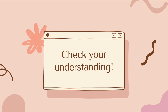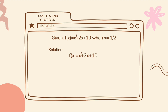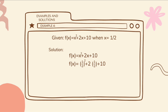Do you now know how evaluation of functions work? Let's try some more examples. Example number 4. For the fourth example, we have the given f of x is equal to x squared plus 2x plus 10, when x is equal to 1 half. We substitute 1 half to all the x values in the equation. So it becomes f of 1 half is equal to 1 half squared plus 2 times 1 half plus 10.